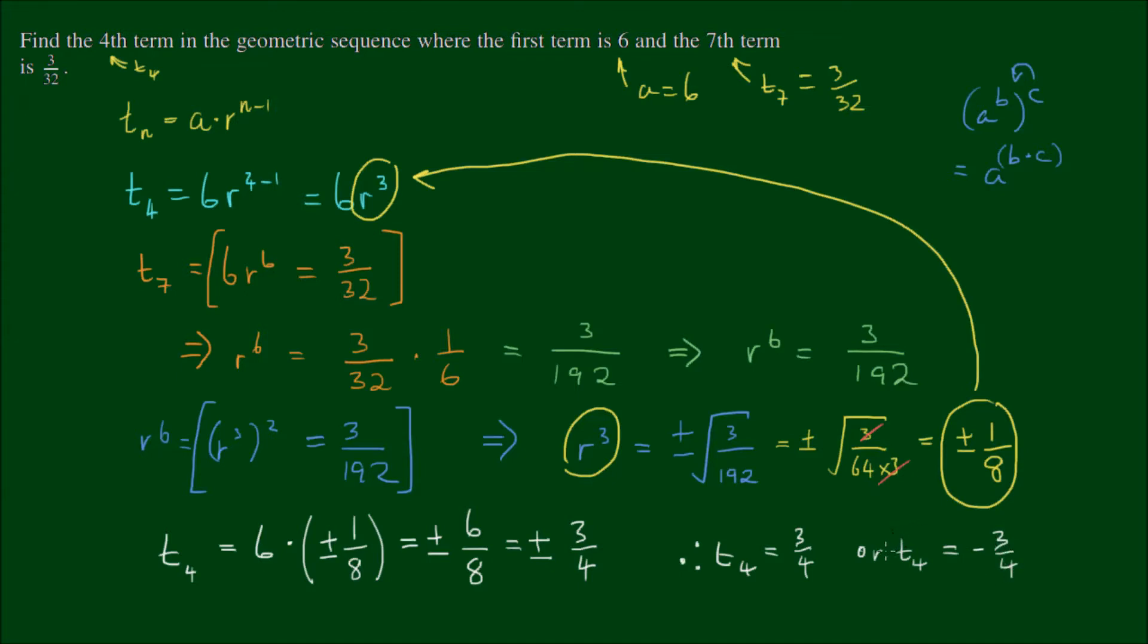So this sequence contains numbers that alternate between positive and negative. For extra bonus marks, does this sequence display exponential growth or exponential decay? Well, we can deduce by inspection that the common ratio is less than 1, or the magnitude of it is less than 1. It actually is equal to positive or negative 1 half, if we take the cube root. So that means the absolute value of r is less than 1.